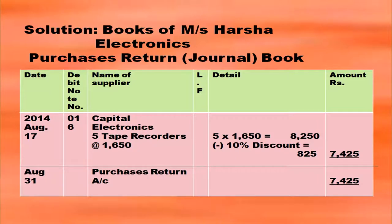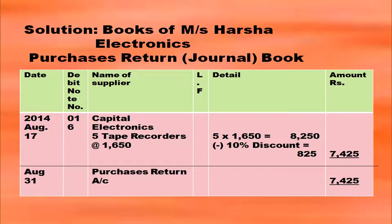The date is written with year first, then month and then date. Write the debit note number. Name of the supplier to whom you are returning the goods: Capital Electronics. What you have returned: 5 tape recorders at rupees 1,650. Detailed calculation in the details column: 5 × 1,650 = 8,250. Trade discount of 10 percent: 8,250 × 10/100 = 825. So 8,250 minus 825 gives 7,425, and this amount is written in the amount column.